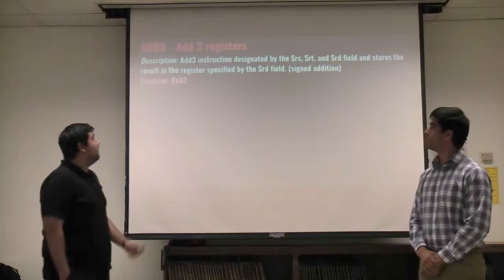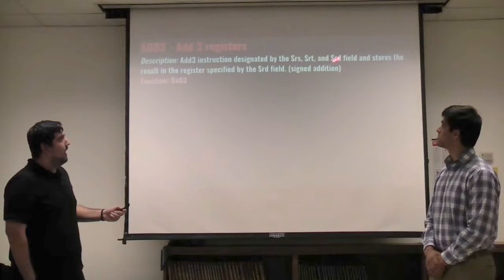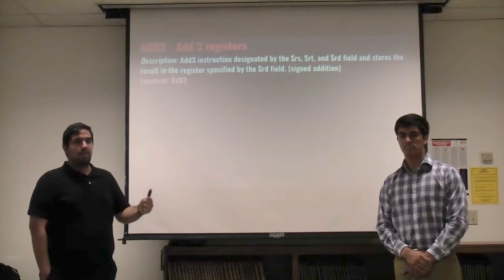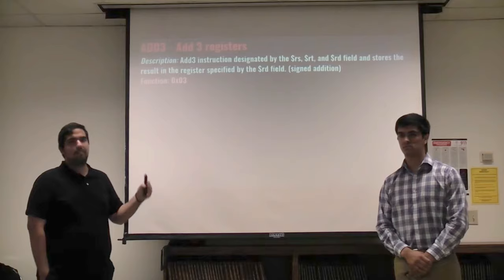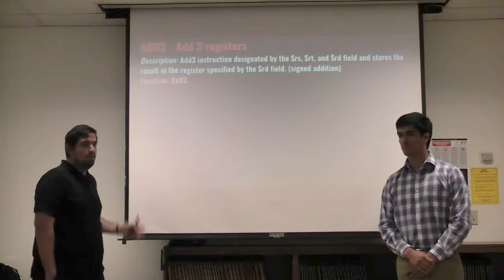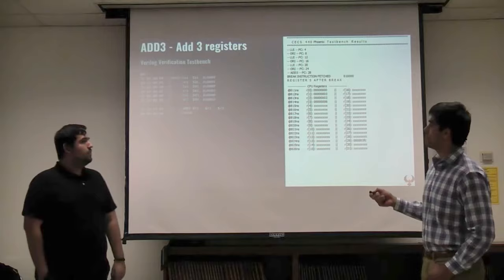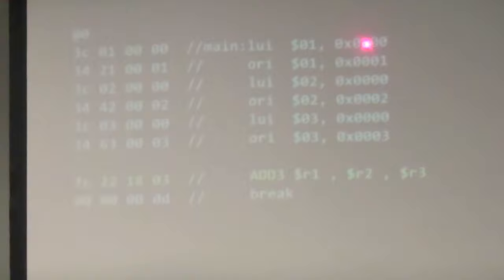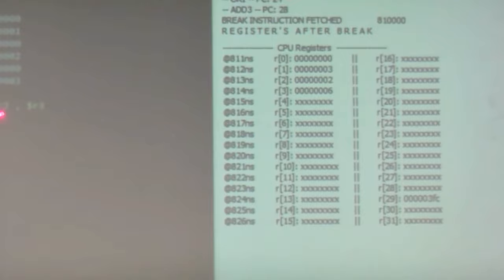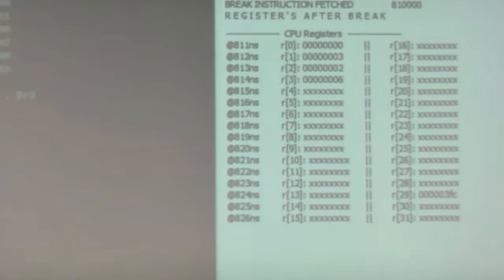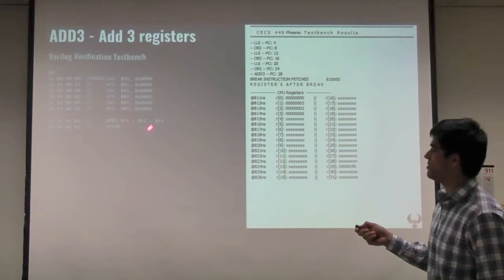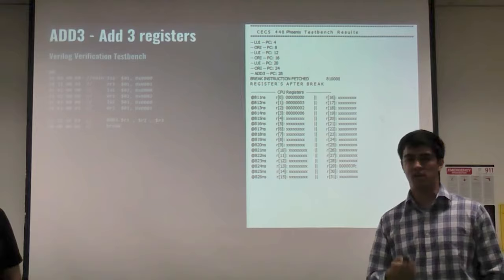Next is the add three registers instruction. RD is used as both source and destination. We load register RS and RT, add them, store back to RS, then load RS (which now contains RS+RT) and RD, add them, and store the result back to RD — effectively computing RS + RT + RD. This uses signed addition. The test bench loads registers 1, 2, and 3 with values 1, 2, and 3 respectively. The first step adds registers 1 and 2 to get 3, stored in R1. Then R1 plus register 3 gives 6, confirming add three registers is working correctly.